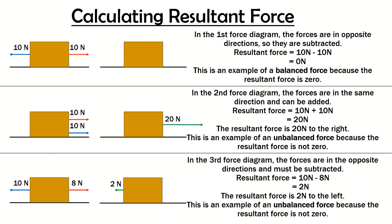Subtract the smaller force from the bigger force so that you get a positive result, and there will be 2 newtons to the left. This is another example of an unbalanced force because the resultant force is not zero.